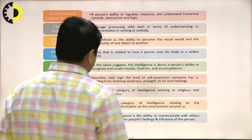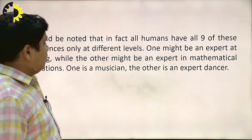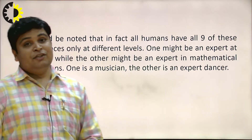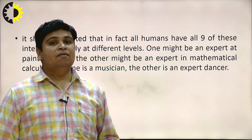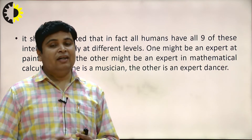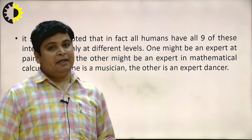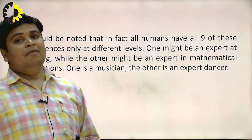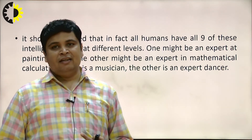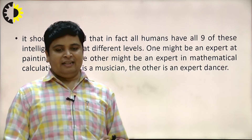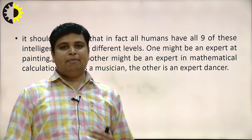It should be noted that all humans have all nine of these intelligences, only at different levels. One person might be an expert in painting while another might be expert in mathematical calculations. One is a musician and another is expert in dance. Intelligence varies from one expertise to another.